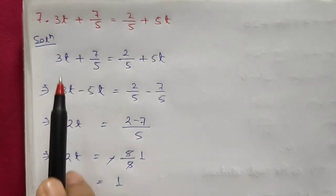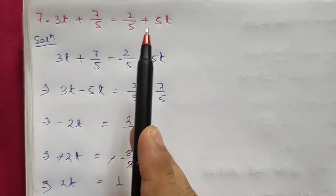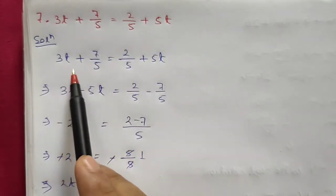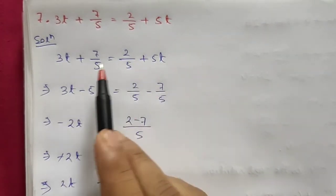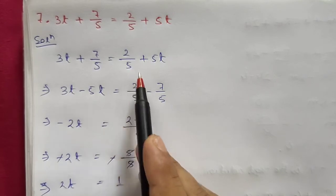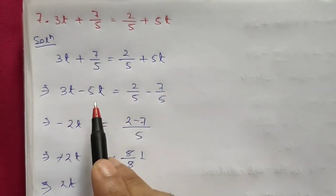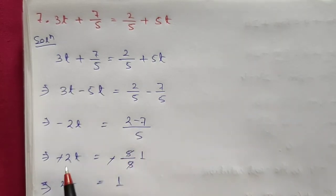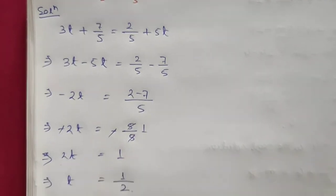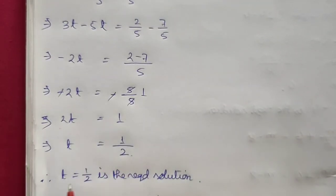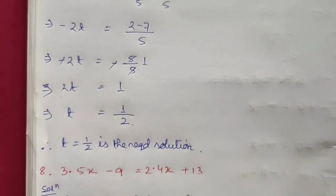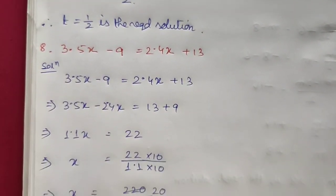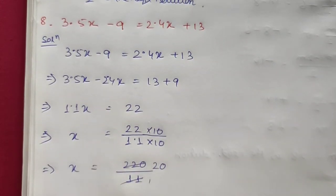Question 6: 3t plus 7/5 equals 2/5 plus 5t. Transposing 5t to the left gives 3t minus 5t, which is minus 2t. Transposing 7/5 to the right gives 2/5 minus 7/5. With LCM 5, this is minus 5/5, which equals minus 1. So minus 2t equals minus 1; the negatives cancel, giving 2t equals 1. Dividing by 2, t equals 1/2. Hence t equals 1/2 is the required solution.